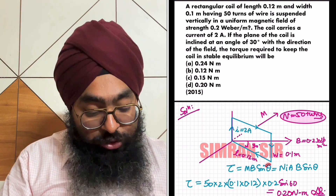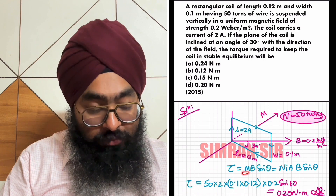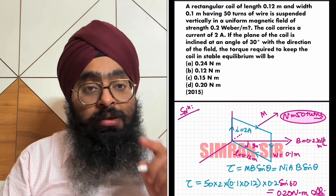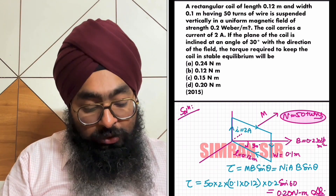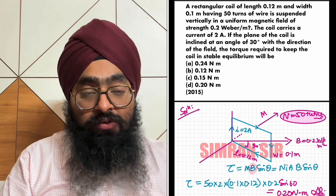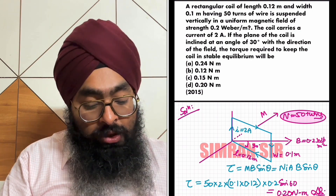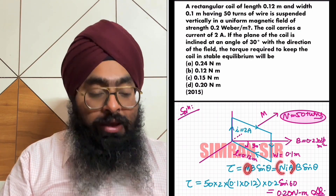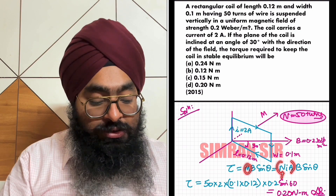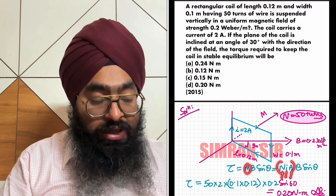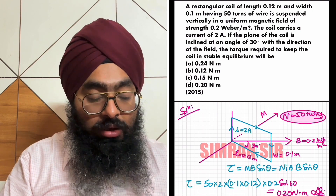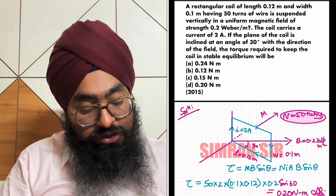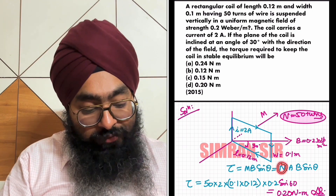Here theta is the angle. Capital M is the magnetic dipole moment, and B is the magnetic field. Magnetic dipole moment M can be written as n times i times A, where n is the number of turns, i is the current in the loop, and A is the loop area. Substituting into B times sin theta: n's value is 50 turns.